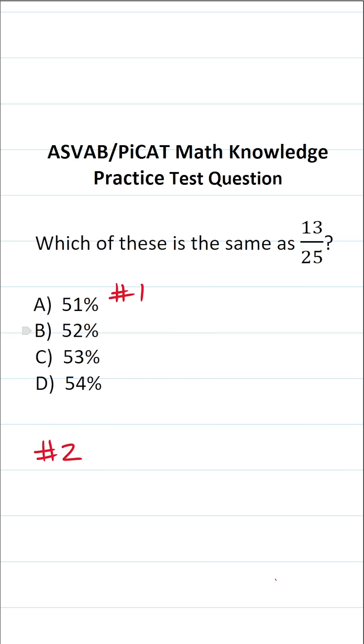So again, we're going to be converting the fraction 13 over 25 to a percentage. The first method relies on rewriting the fraction with a denominator of 100 because anything that has a denominator of 100 is a percent.